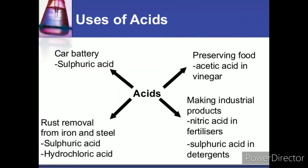The next acid is nitric acid. It is used for preparing fertilizers, explosives, dyes, and drugs. It is used in agriculture as fertilizers, in preparing explosive substances, and in the refining — that is, chemical cleaning — of gold and silver.